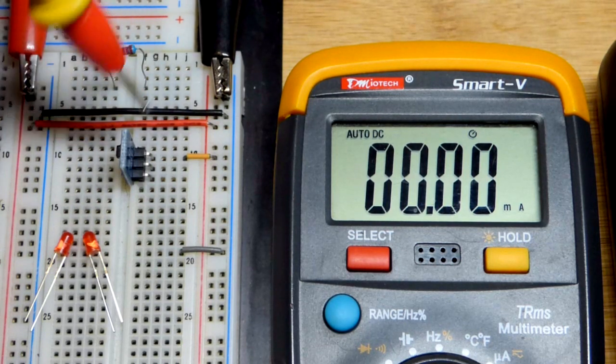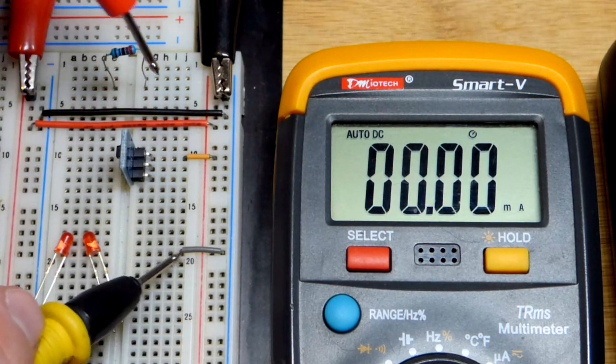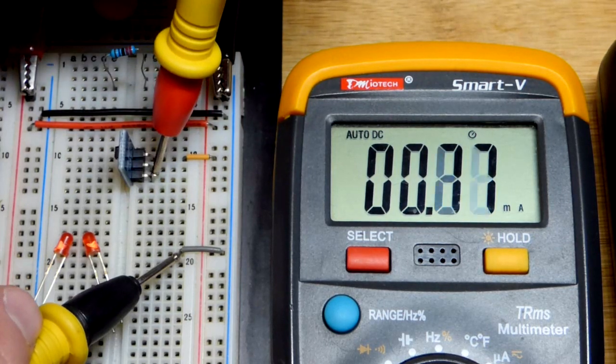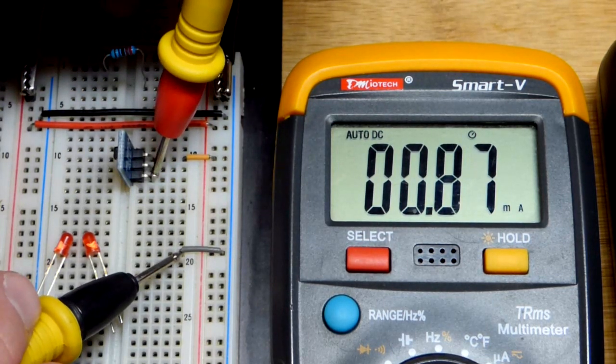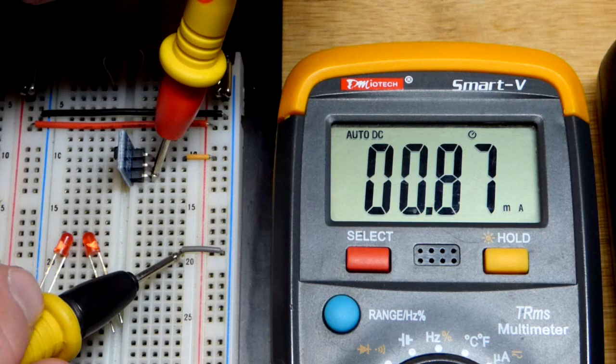I believe that's called the anode and that's called the cathode, though it's a little hard to read the data sheet. This is what I've been getting with this one - about 0.87.